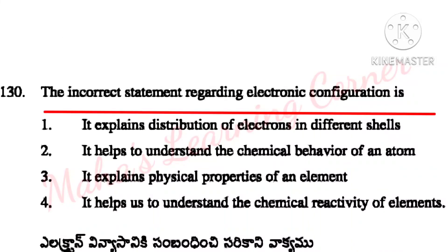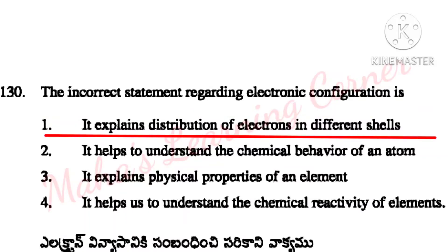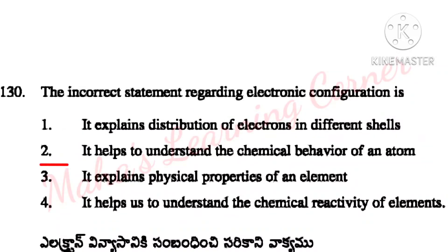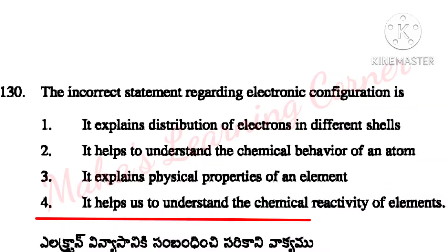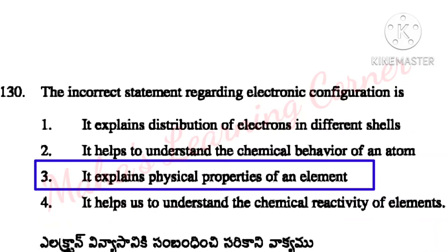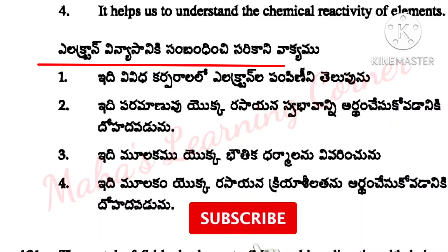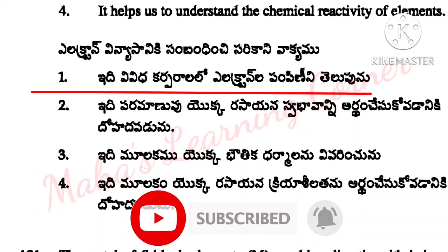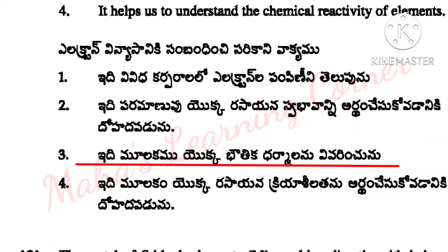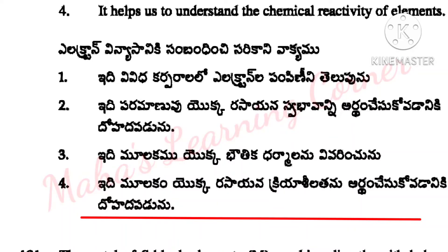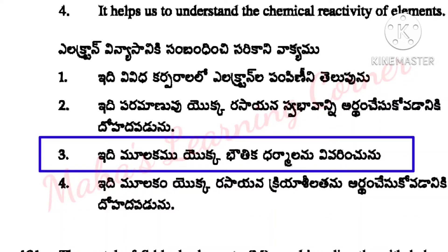The incorrect statement regarding electronic configuration is? Options: It explains distribution of electrons in different shells; It helps to understand the chemical behavior of an atom; It explains physical properties of an element; It helps us to understand the chemical reactivity of elements. Correct answer: Option 3 — It explains physical properties of an element.